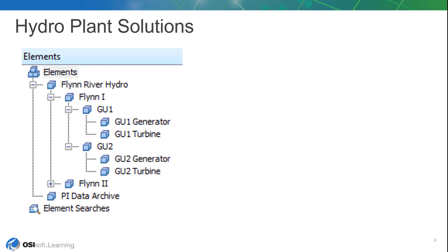The background and scenario for this course is that you have recently been hired as a PI Administrator at the Flynn River Hydro Company, and your first task as PI Admin is to migrate their PI ProcessBook displays to PI Vision. PI users at the company rely heavily on these PI ProcessBook displays, so you want to make sure all the data on these displays is available in PI Vision after migration. Luckily, the company uses Asset Framework and has built out an AF database for their buildings and equipment using templatized AF assets that they have used in their PI ProcessBook displays.